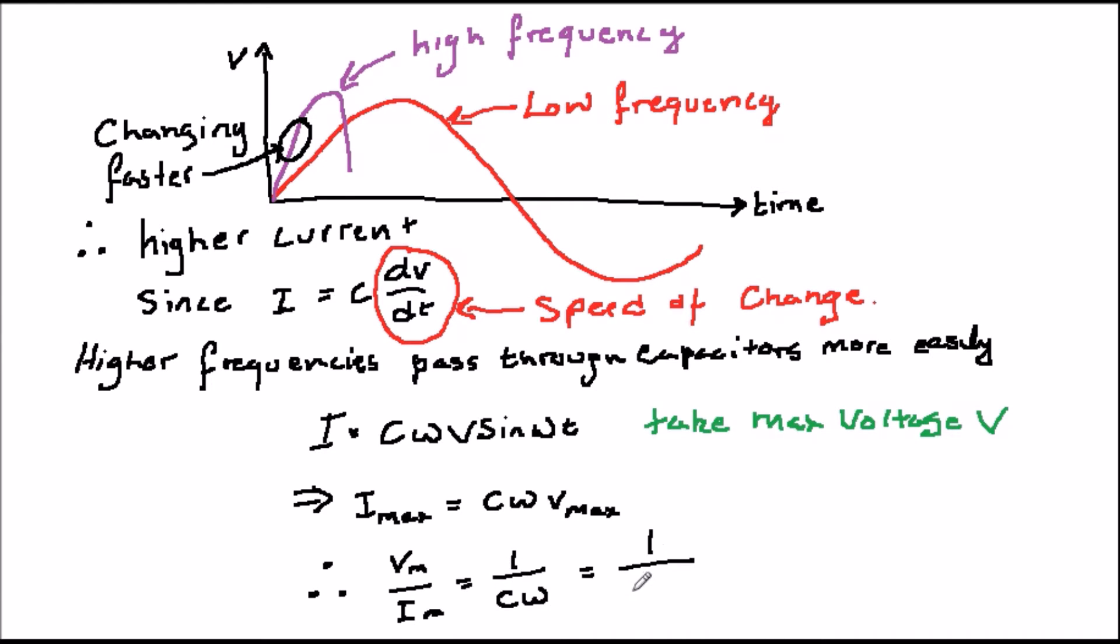Now, there are two very important points why, although this looks like resistance, it is not resistance. Firstly, V and I are out of phase, as explained earlier. And secondly, a resistor opposes current by dissipating electrical energy as heat. It gets hotter.